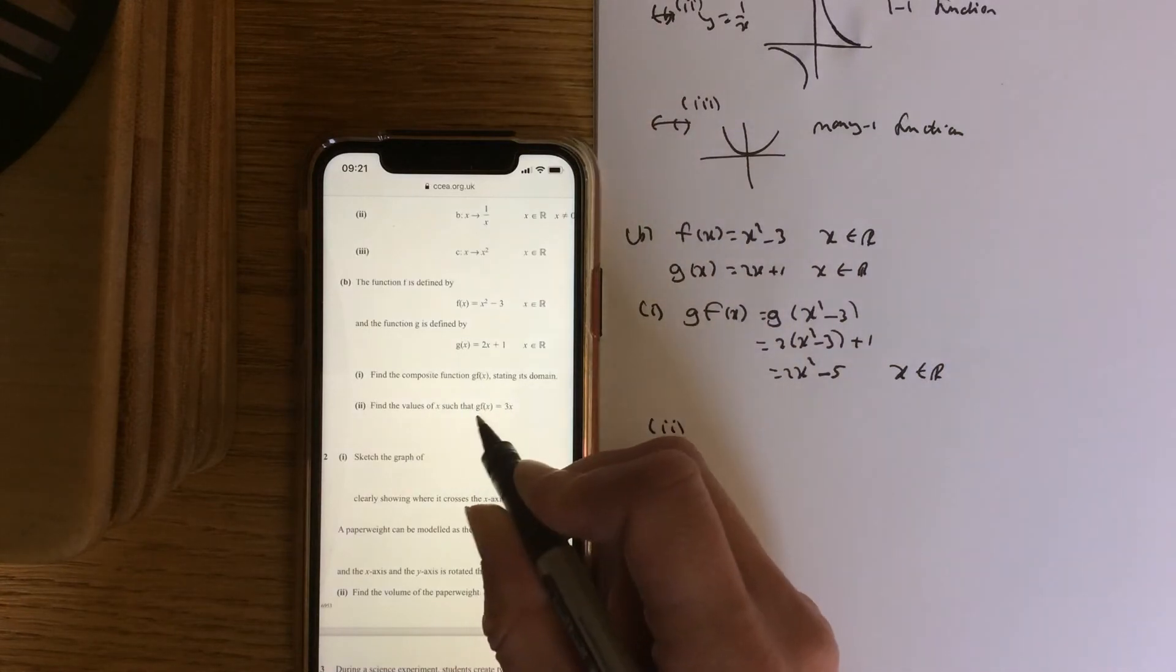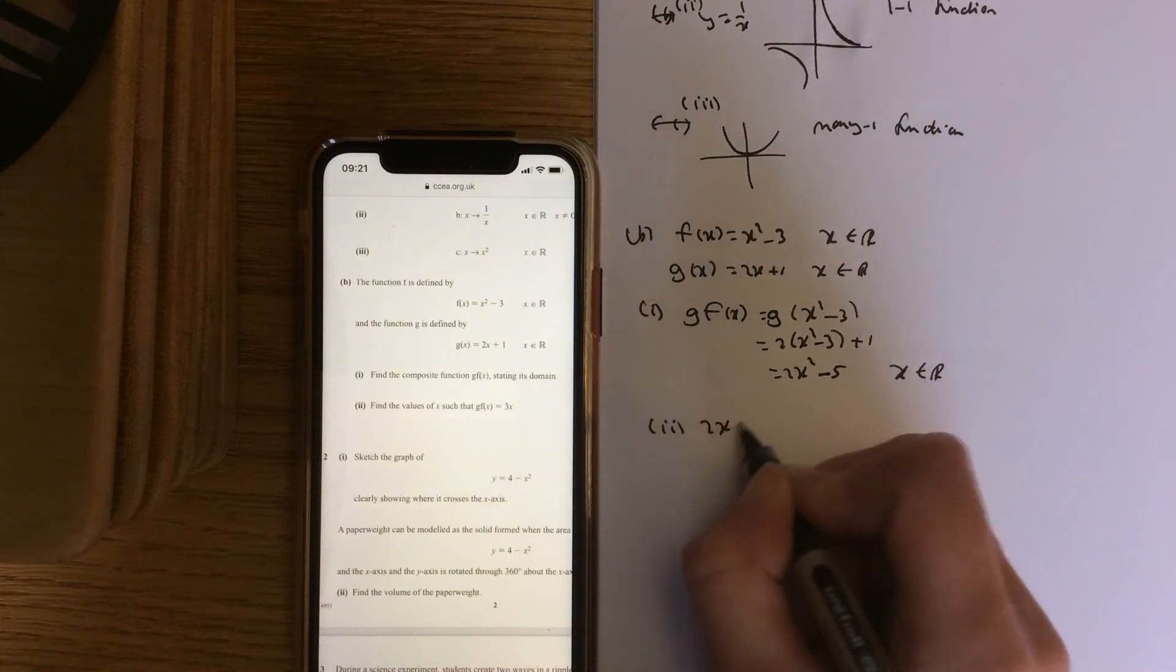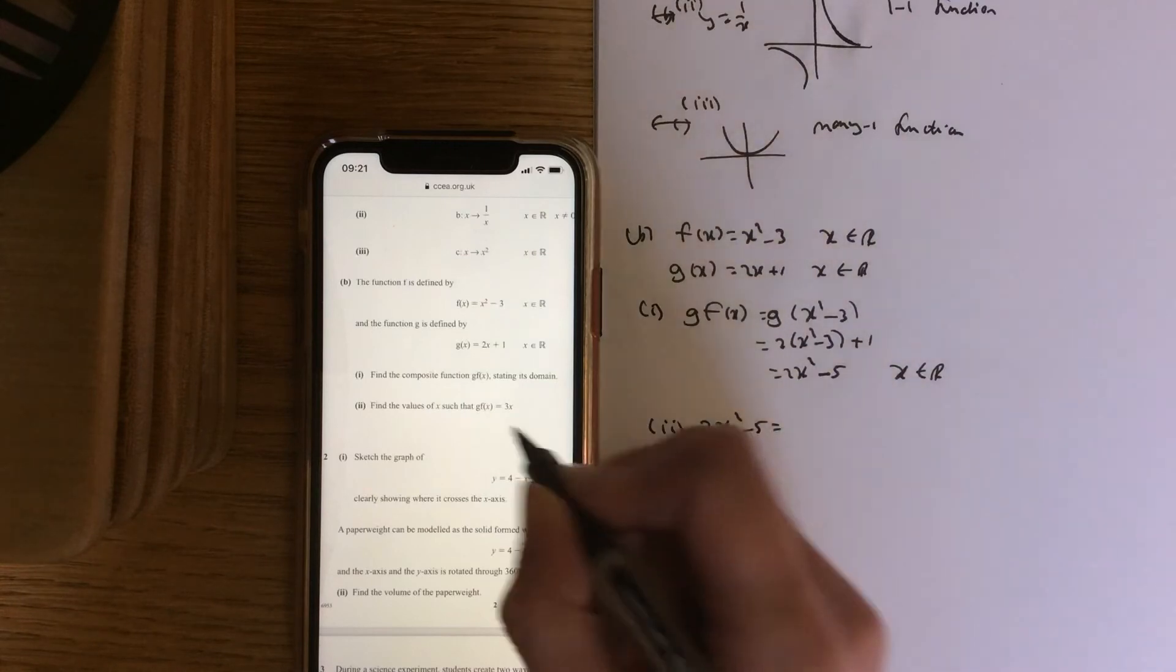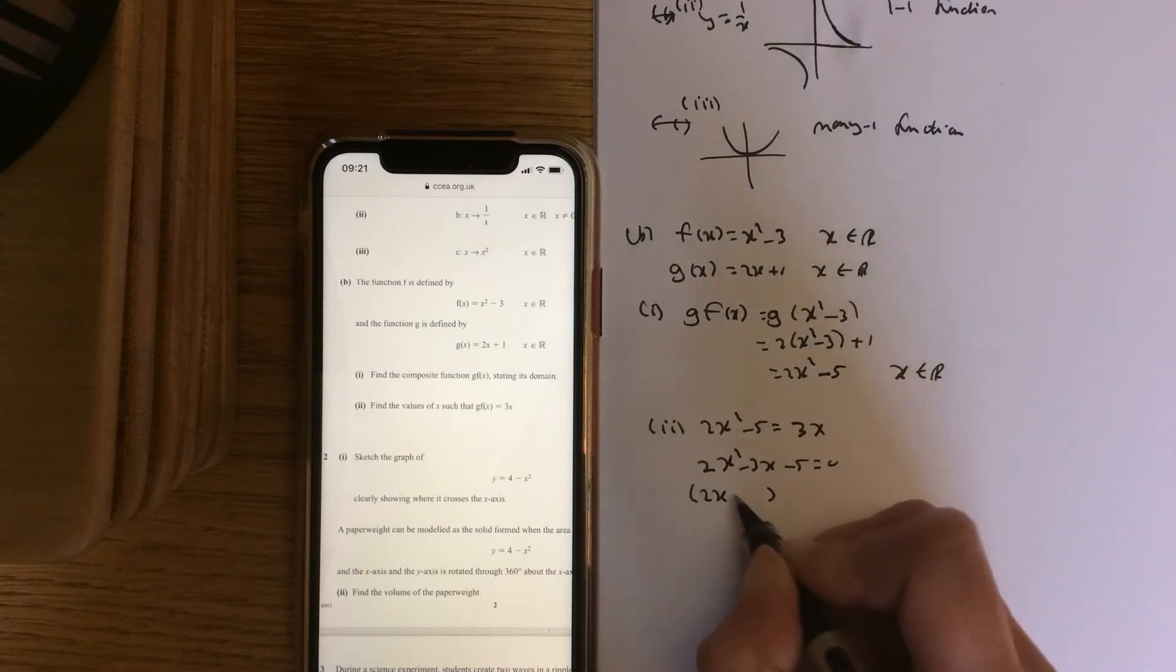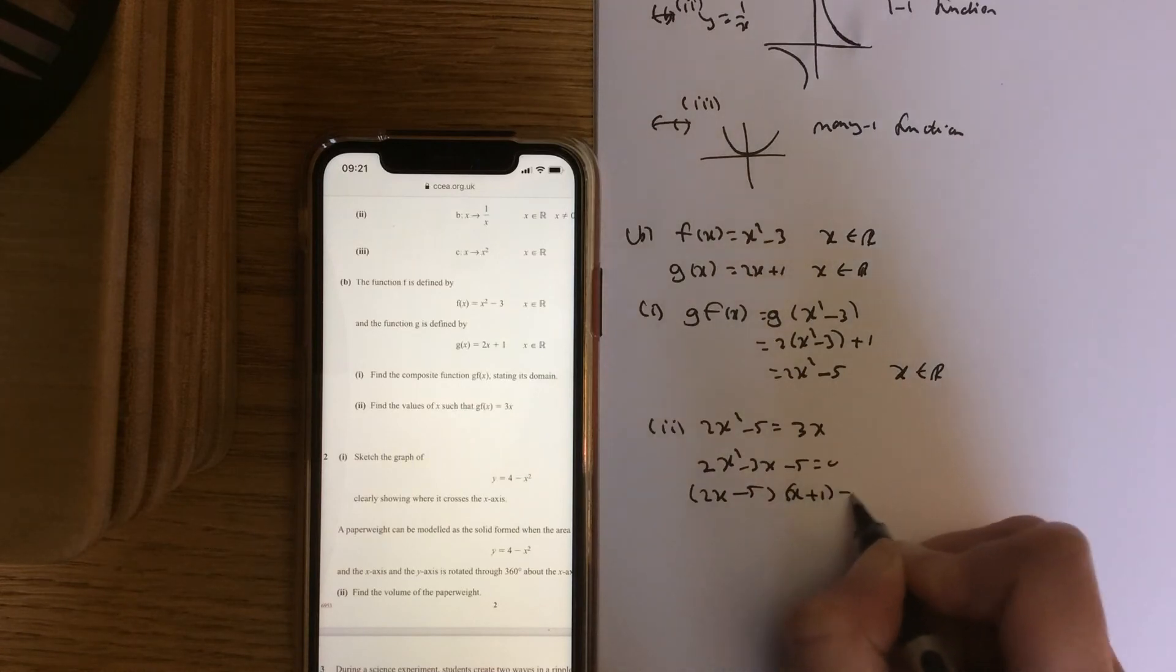Part 2, find the values of gf(x). So 2x squared minus 5 equaling 3x. So you're trying to solve a quadratic here. Minus 3x minus 5 equals 0. That factorizes. 2x minus 5, x add 1 equals 0.